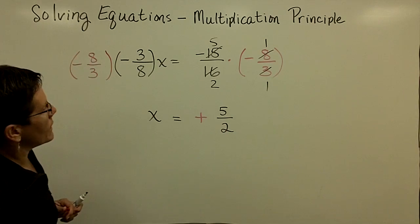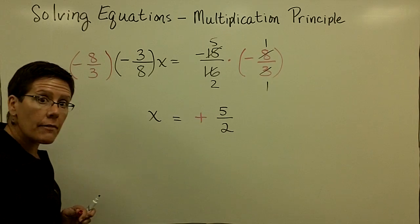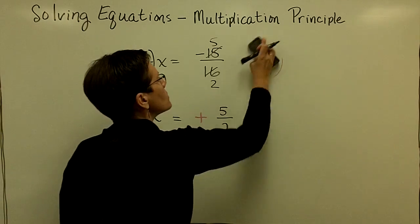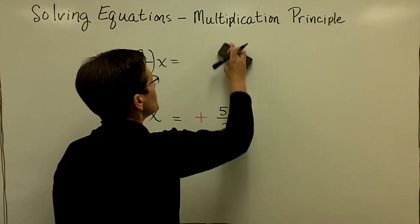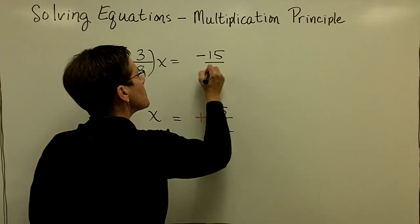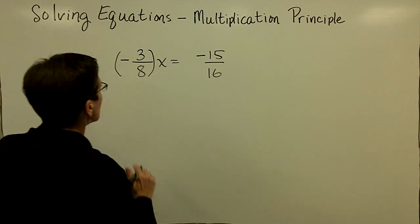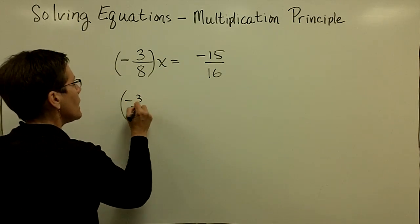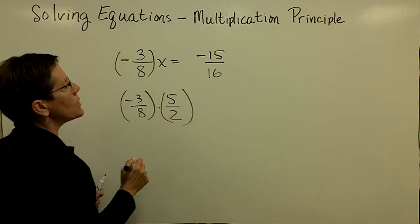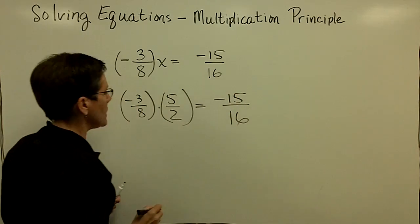Let's check this one. I think I better erase so that we can do that. So my answer was 5 halves. I'm going to go ahead and erase my work. Try to put the original problem back up. So that was a negative 15 over 16, I hope. And I'm going to plug in 5 halves for x right here.